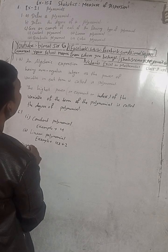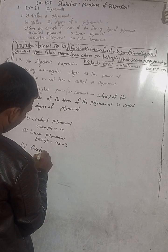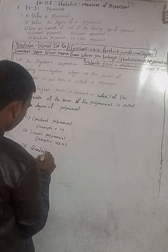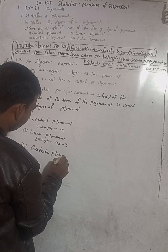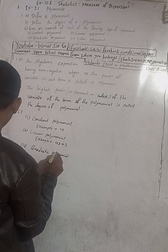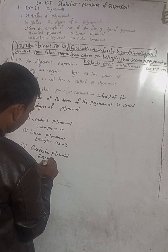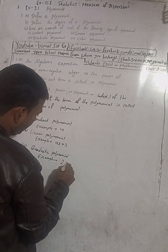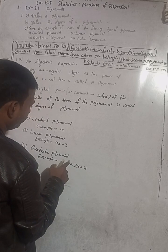Number three is quadratic polynomial. For the quadratic polynomial, the power must be two — whereas for linear, the power is one only.